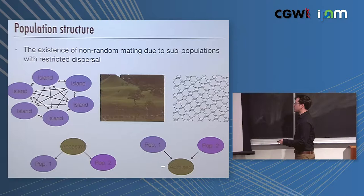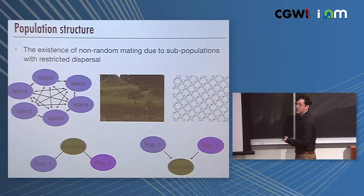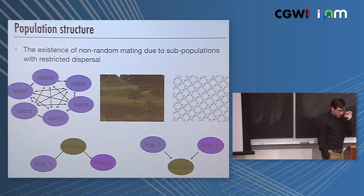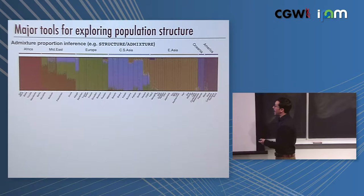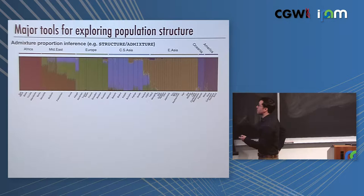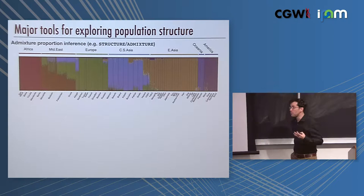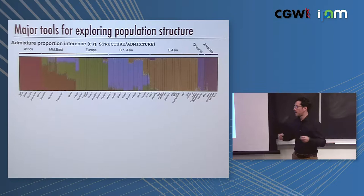Or you can have individuals who have their ancestry from multiple source populations. In that case, those individuals are called admixed and these are admixture models. So there are many different conceptualizations and many different tools for exploring population structure. This is the output from one of the most popular branch of methods, methods that do admixture proportion inference, for example the program Structure or Admixture. These work within that admixture view of population structure where each individual has their ancestry from different source populations.